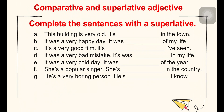E: 'It was a very cold day' — 'It was the coldest day of the year.' F: 'She's a popular singer' — 'She's the most popular singer in the country.' G: 'He's a very boring person' — 'He's the most boring person I know.'